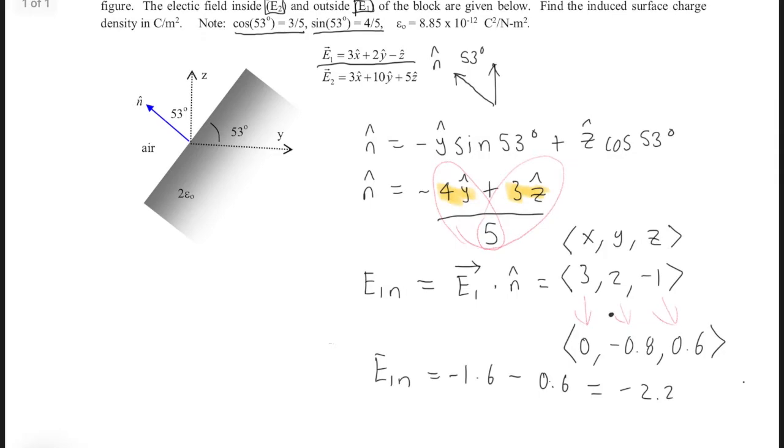My mistake. And then we want to do our D1n. D1 will tell us the electric displacement vector, which will help us understand where the free charges are regarding this block. So we would say D1n = ε₀E1n. So we get -2.2ε₀. D1n. And we use the displacement vector to find the surface charge density.